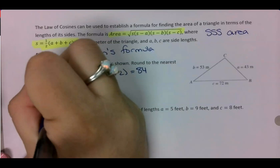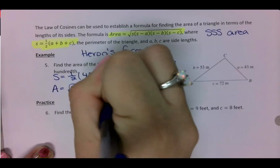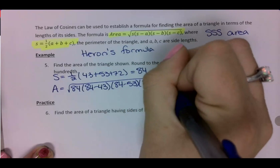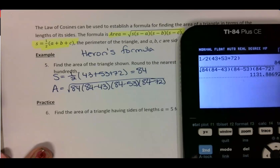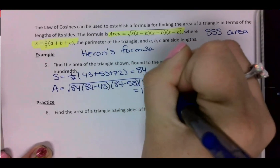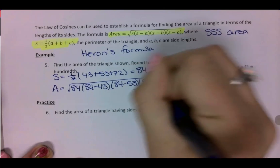Then I need to go ahead and find my area. So I plug into that area formula, I have 84 times 84 minus 43, times 84 minus 53, times 84 minus 72. So then I want to go ahead and type this in the calculator. Which, it tells me to round to the nearest hundredth, so that's two decimal places. This is going to give me 1131.89 because it's area and because I have units, I need to write it squared, so I have meters squared for my final answer.